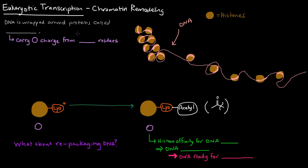In this video, I want to talk about how transcription in eukaryotes gets started. It gets started via this process called chromatin remodeling.